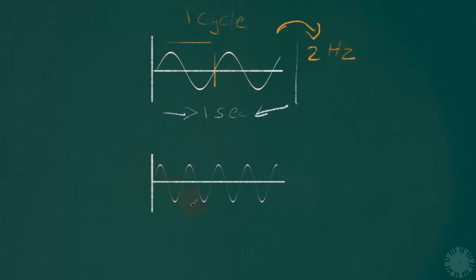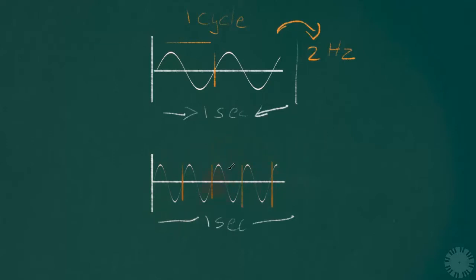Now for the second wave — let's assume this portion also represents one second of time duration. How many cycles is this completing in one second? Peak, trough, and back — that's one cycle. Peak, trough, and back — another cycle. Peak, trough, and back — another. Peak, trough, and back — another. Approximately, this wave is doing four cycles per second.